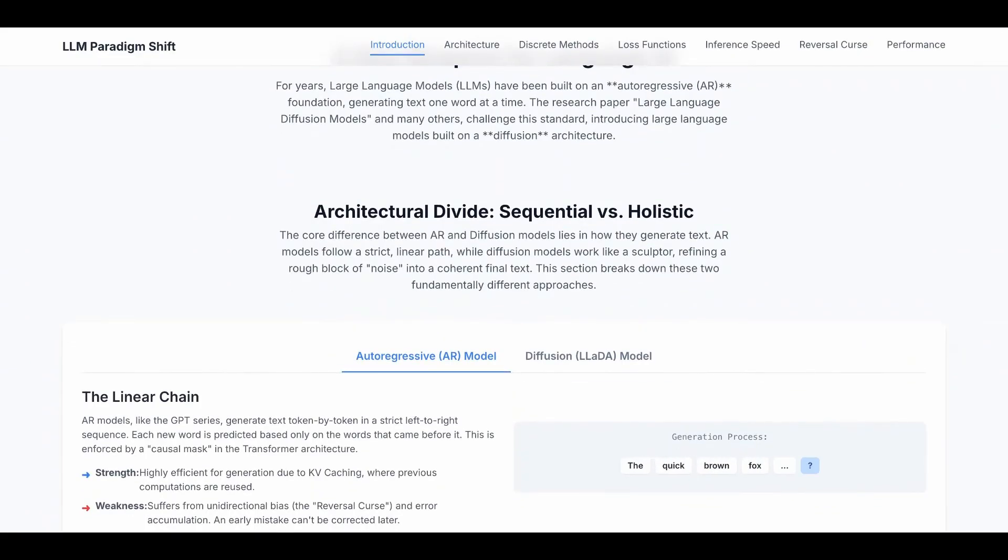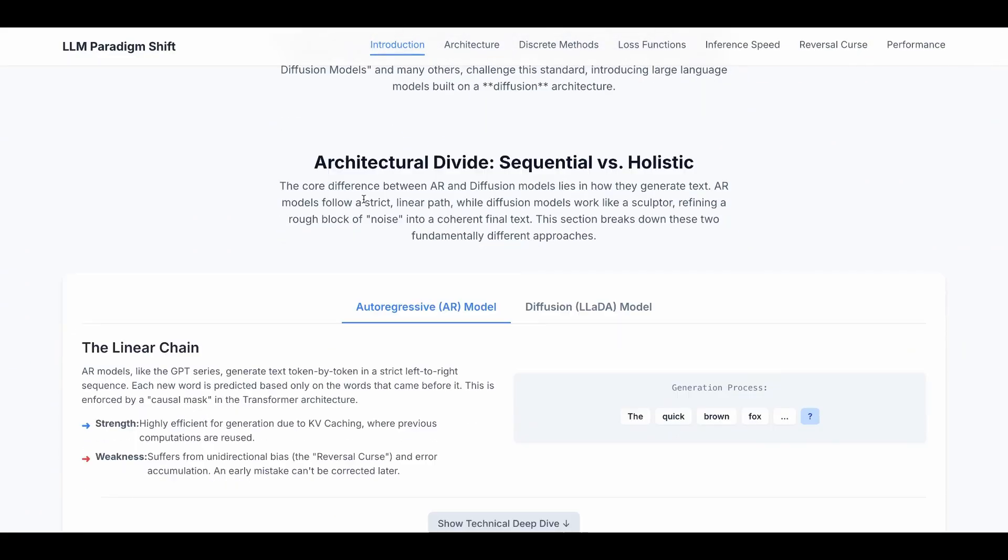First, let's take a brief look at the differences. The core difference between autoregressive and diffusion models lies in how they generate text. Autoregressive models follow a strict linear path, basically next token prediction.